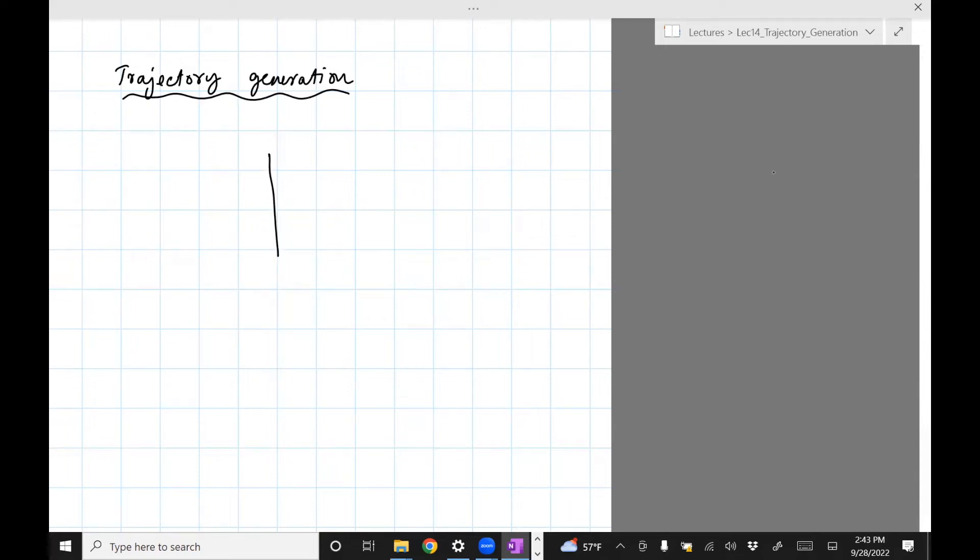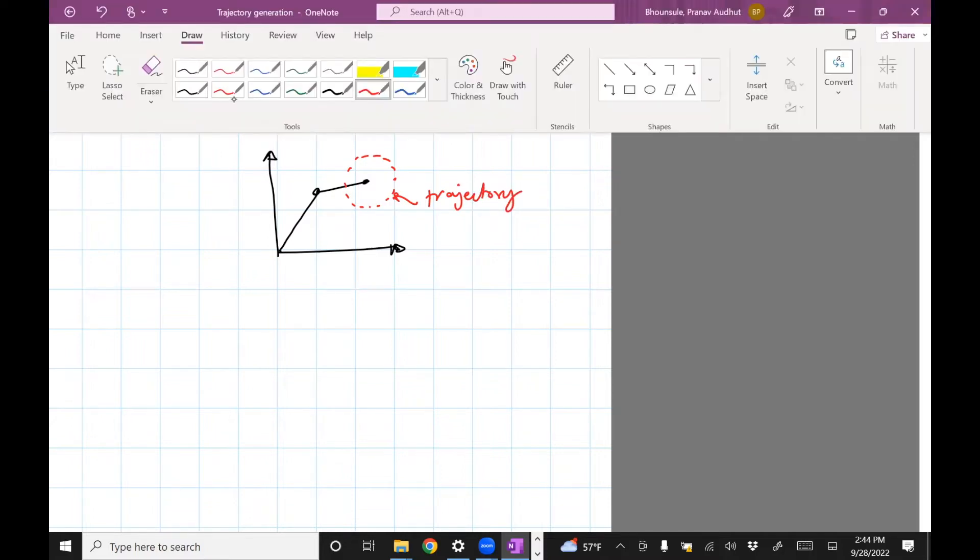Okay, so where we've seen trajectory before, we have seen a trajectory when we talked about the two-link manipulator, and we did many things with it. We got it to draw circles and other curves, right? So this is what we did, but there was a big caveat, which is...